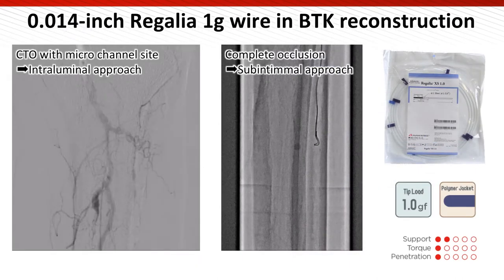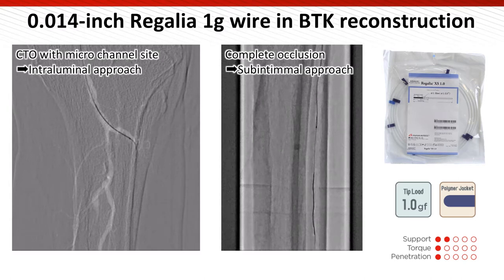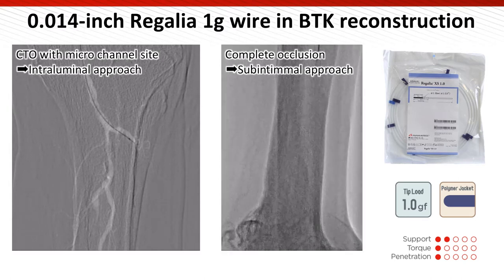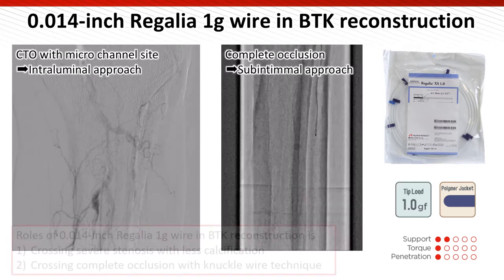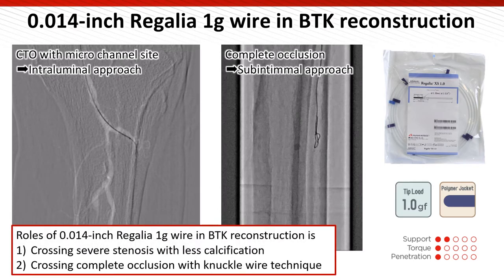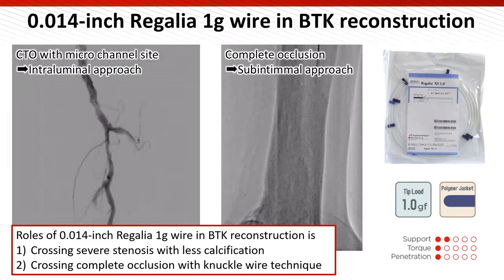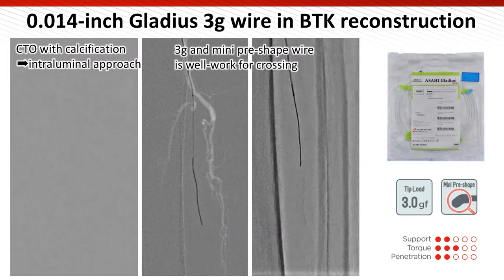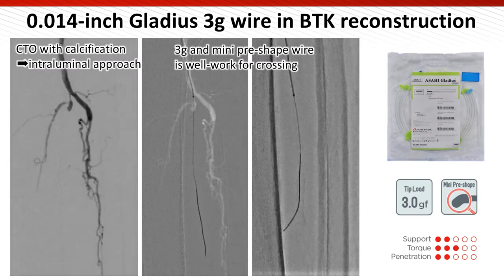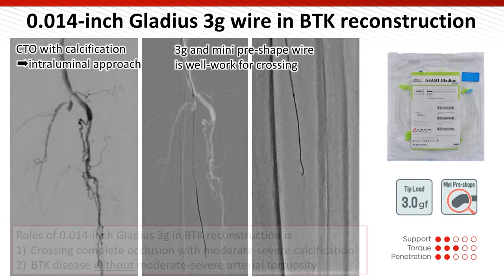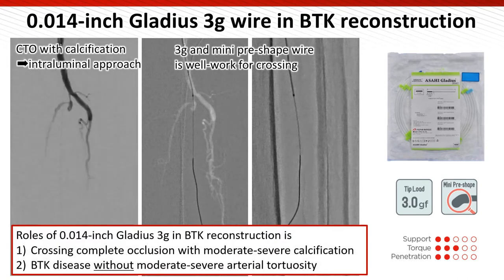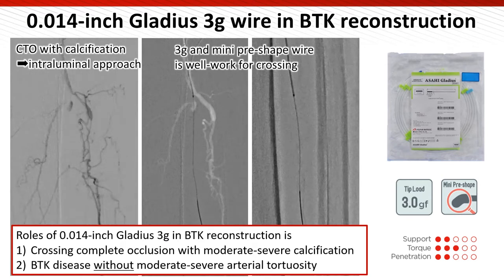My CTO strategy is generally based on lesion morphology. When CTO has a microchannel without calcification, an intraluminal approach is first attempted. On the other hand, when a complete occlusion without any microchannel is revealed at the CTO site, a sub-intimal approach using the 0.014 NAKU wire technique is intentionally applied. When CTO has calcification, I strongly recommend using a Gladius 3g wire. The role of the 0.014 NAKU wire in BTK revascularization is for crossing complete occlusions with moderate to severe calcification in BTK disease without moderate to severe arterial tortuosity.